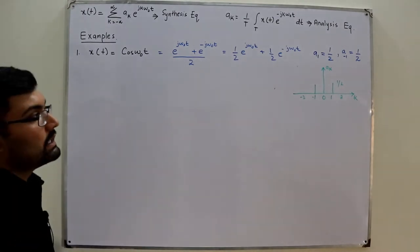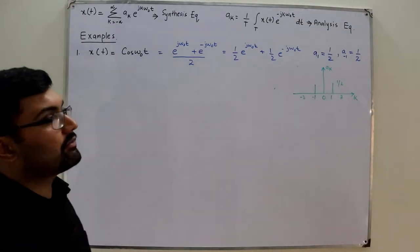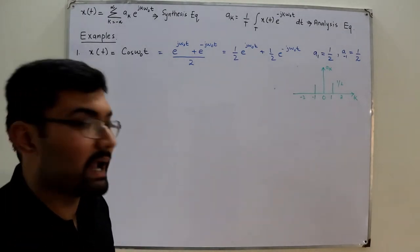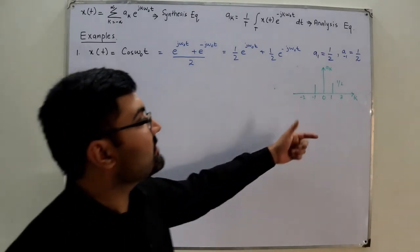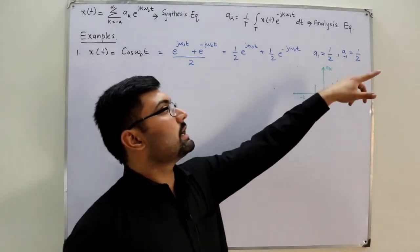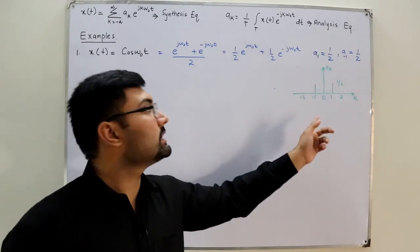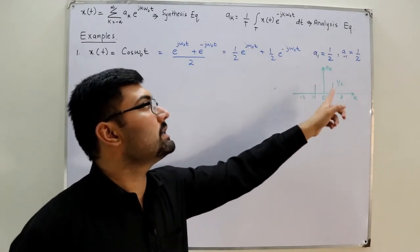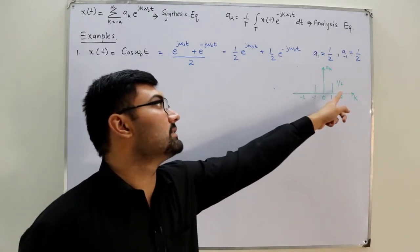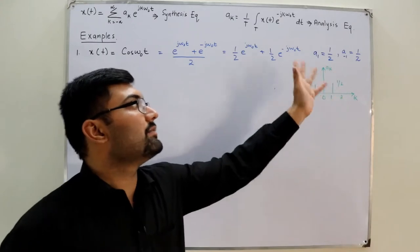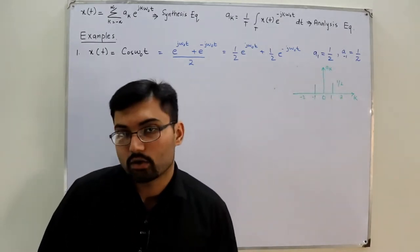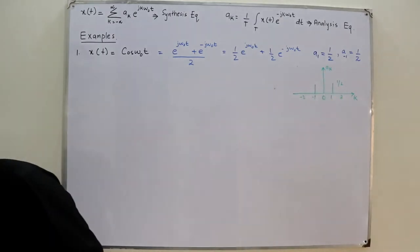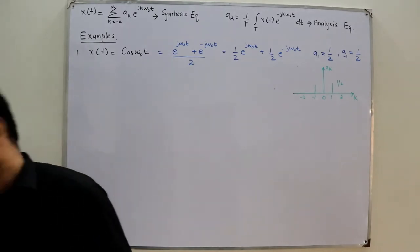If you are asked to find the magnitude and phase spectrum, you take the magnitude on one part and the phase on the other. Here these are real numbers, so you only have the magnitude spectrum. We don't have a phase spectrum because the angles are all zero.